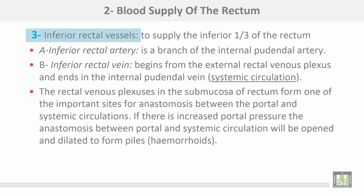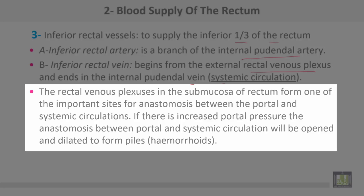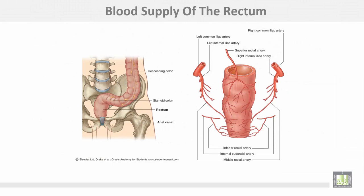The inferior rectal vessels supply the inferior third of the rectum. The inferior rectal artery is a branch of the internal pudendal artery. The inferior rectal vein begins from the external rectal venous plexus and ends in the internal pudendal vein as systemic circulation. The rectal venous plexus in the submucosa forms one of the important sites for anastomosis between portal and systemic circulation. Here is the blood supply — superior, middle, and inferior rectal arteries.